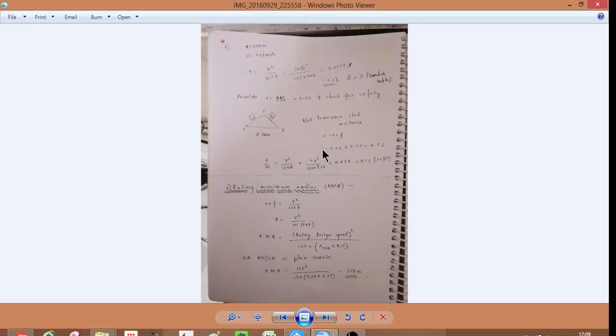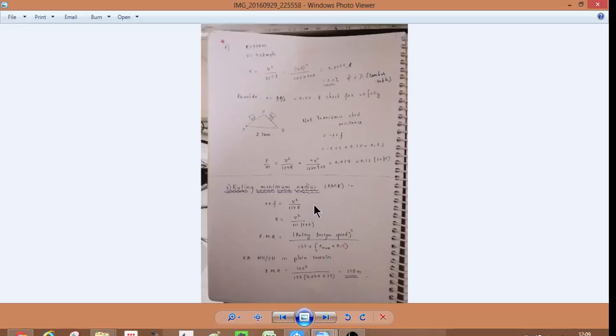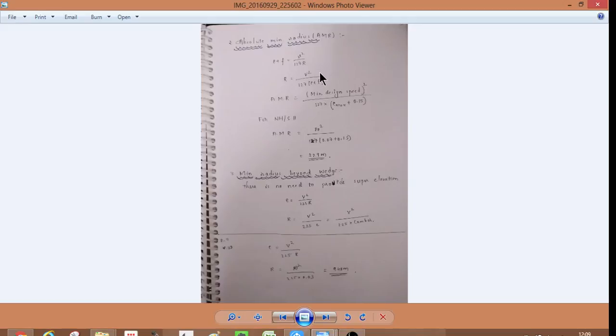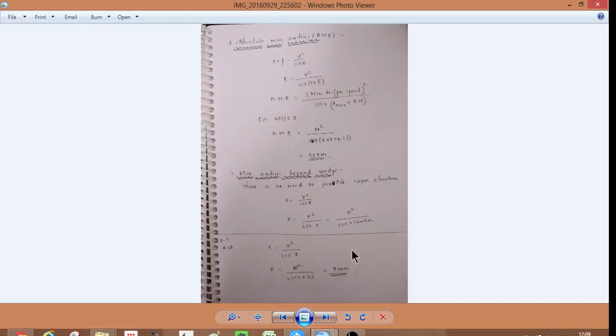And then you have ruling minimum radius, absolute minimum radius. So, rolling minimum radius is E max plus 0.15, ruling design speed, whole square by 127. And then, absolute minimum radius is given by minimum design speed. Rolling minimum radius means ruling design speed. And then, absolute minimum radius is minimum design speed. Minimum radius beyond which super elevation E is V square by 225R.